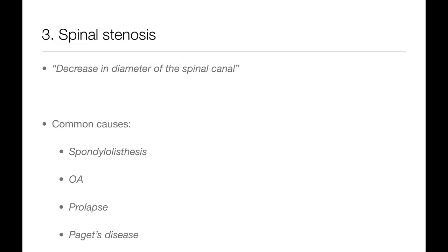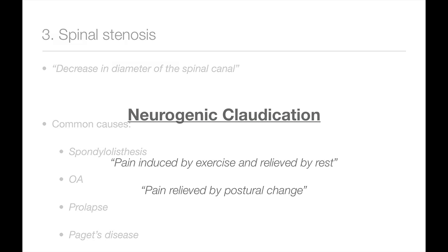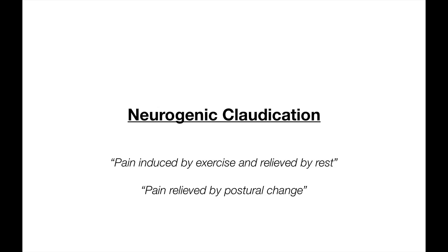Typically, patients describe lower back pain that's been getting progressively worse over time, as well as pain in the legs that is brought on by exercise and relieved by sitting down or leaning forward. This feeling of pain that's relieved by sitting or leaning forward is known as neurogenic claudication. The mechanism is quite interesting: in spinal stenosis, the narrowing of the spinal canal means that the venous supply in the spinal cord gets squashed slightly, so venous return through them is impeded and you get venous congestion.